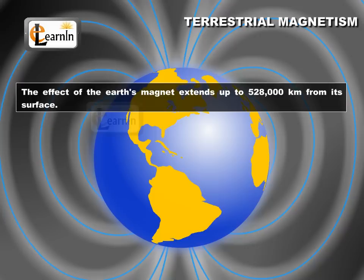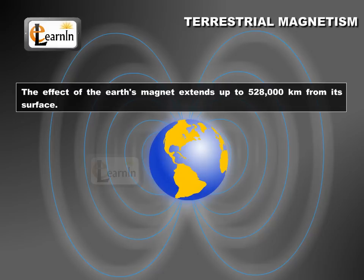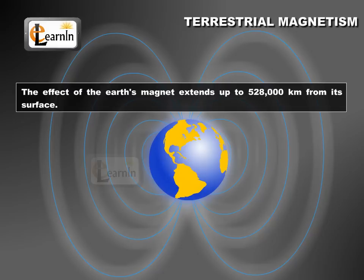The effect of the earth's magnet extends up to 528,000 kilometers from its surface. To know the properties of the earth's magnet, one must know some quantities which are called the magnetic elements of the earth's magnetic field, which is studied under the name terrestrial magnetism.